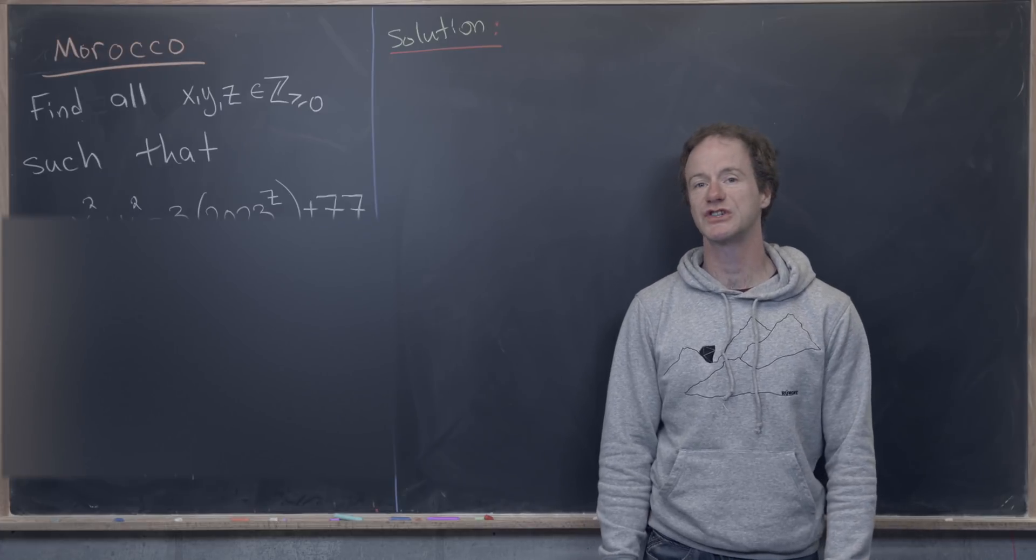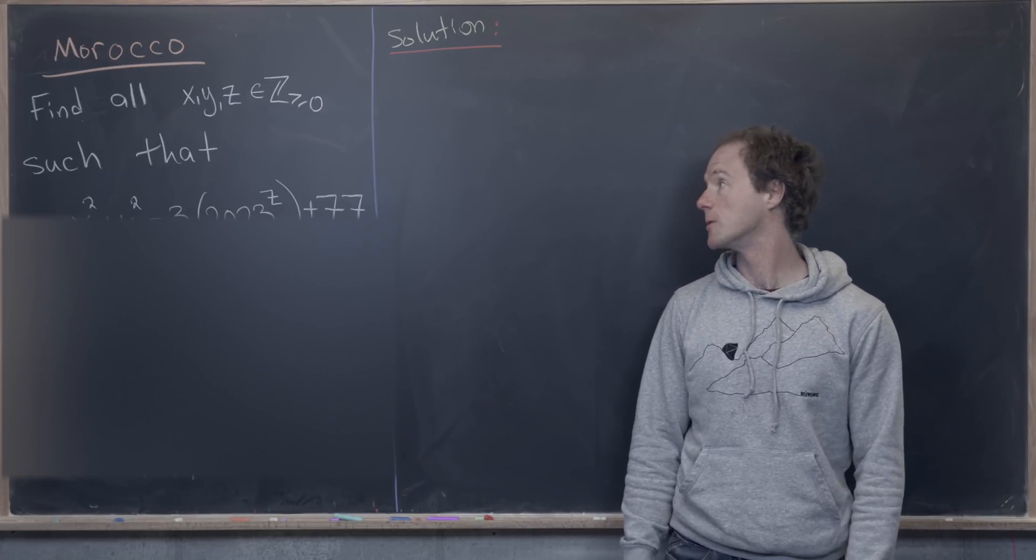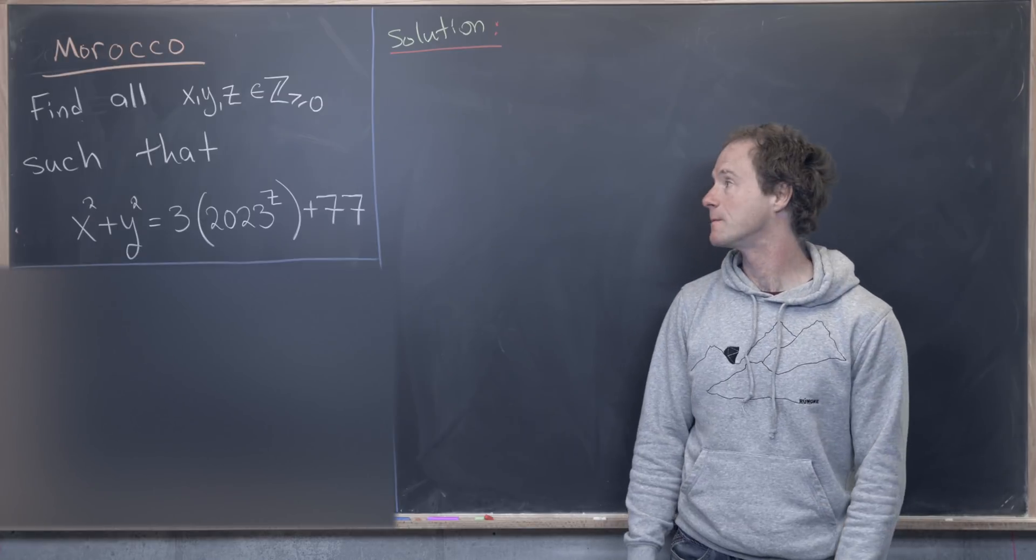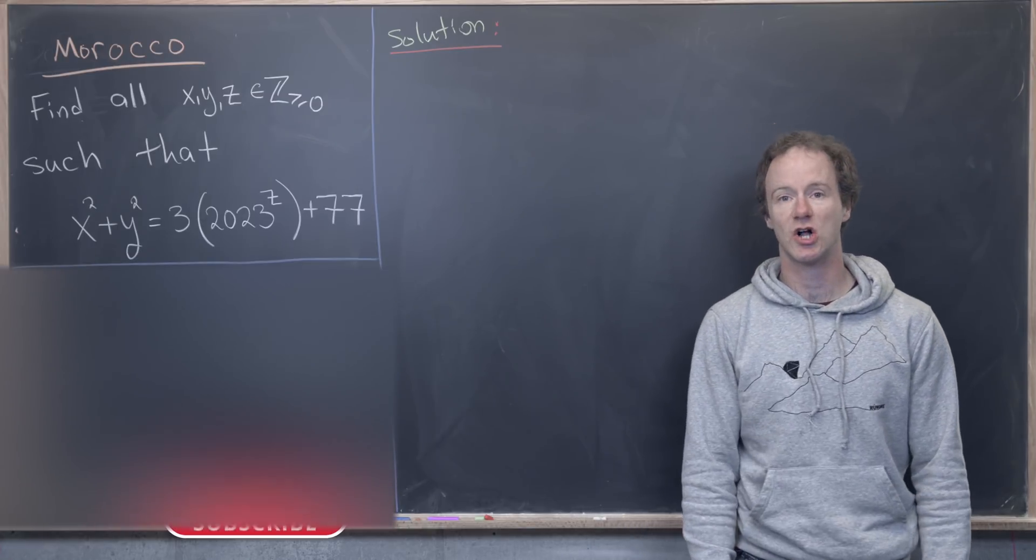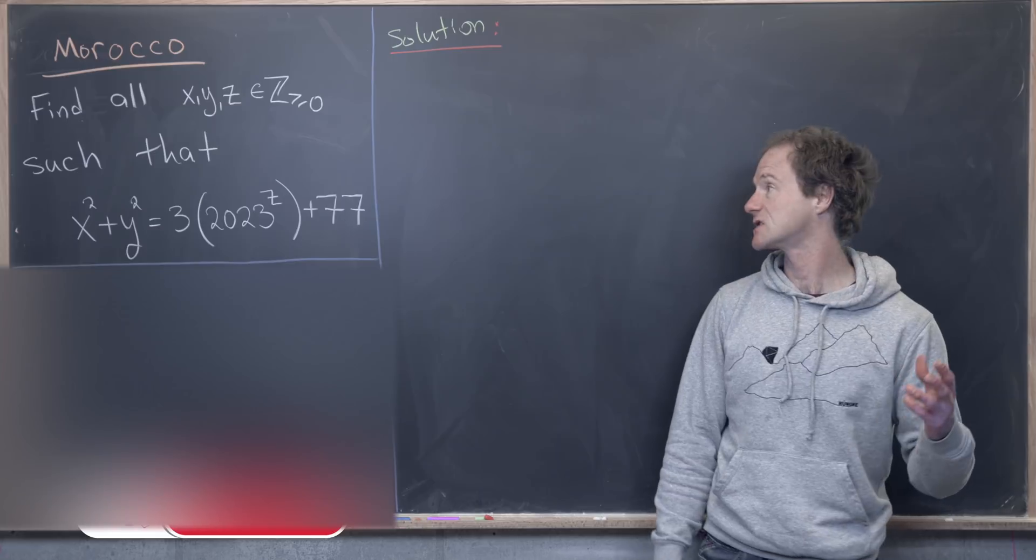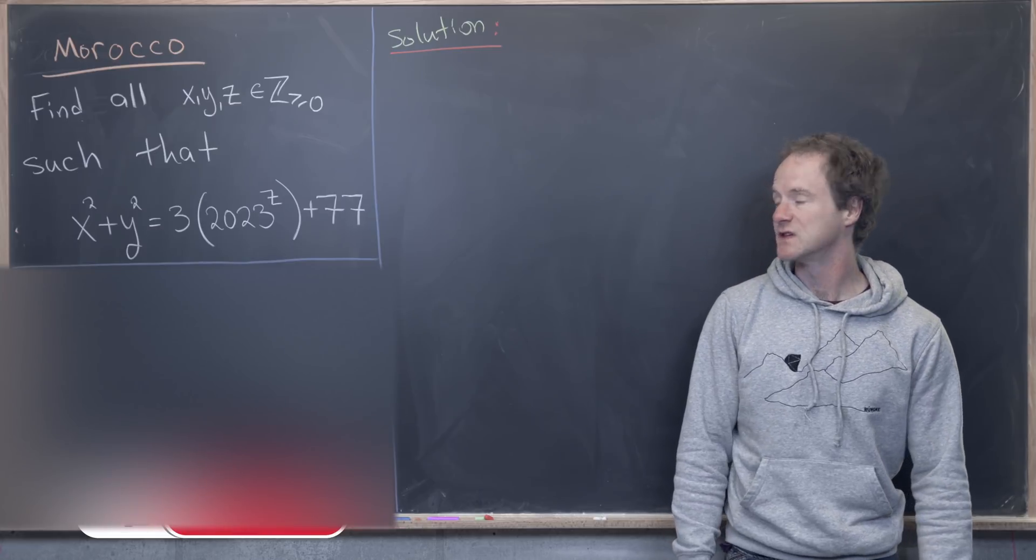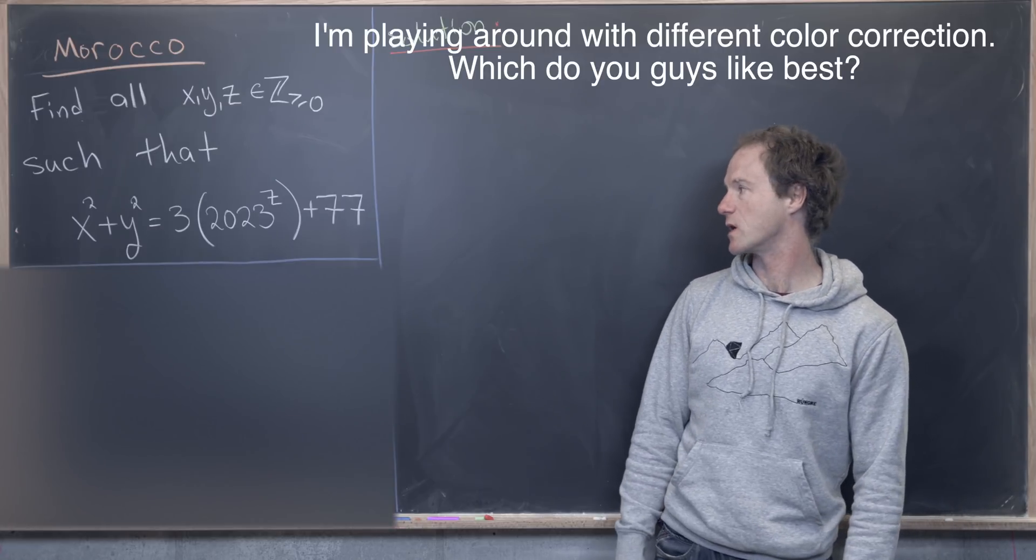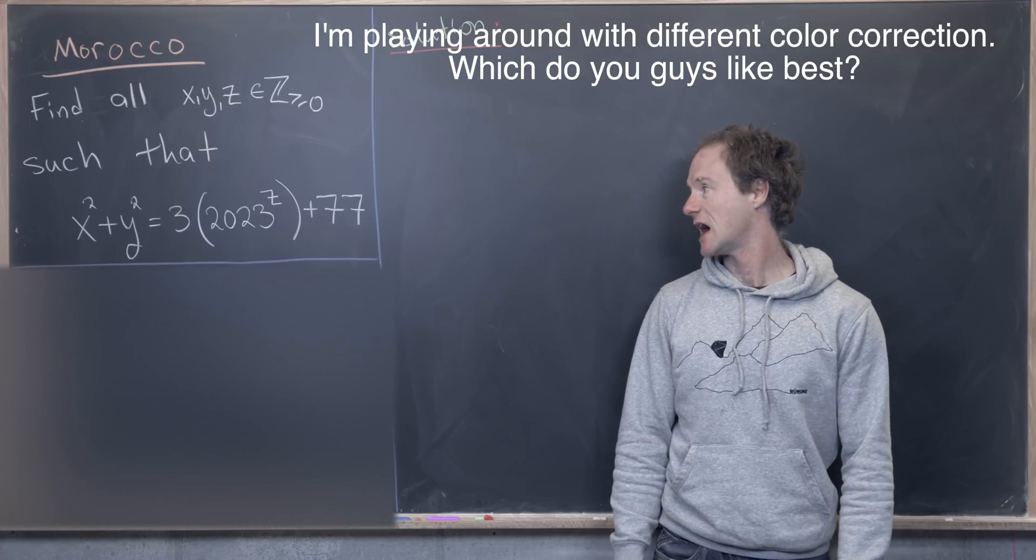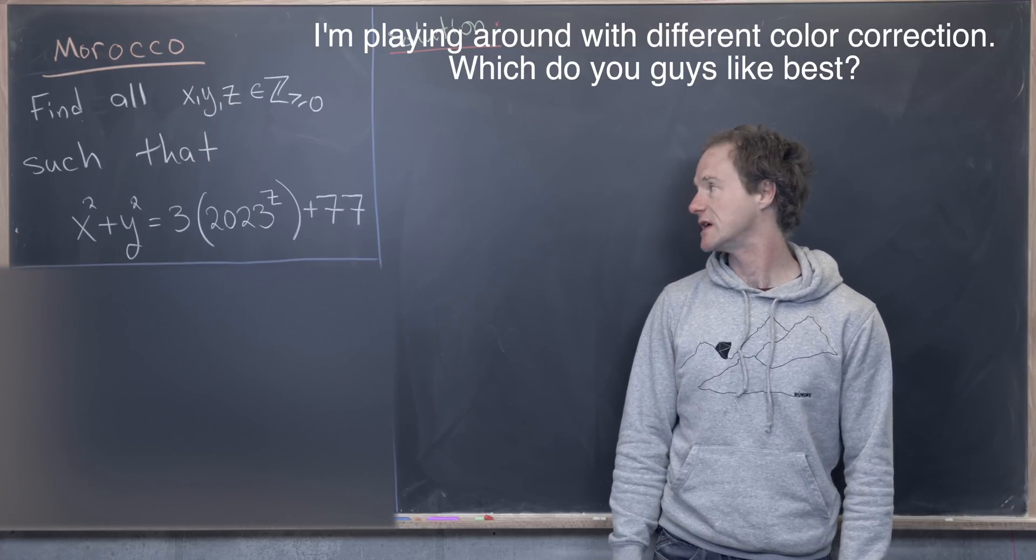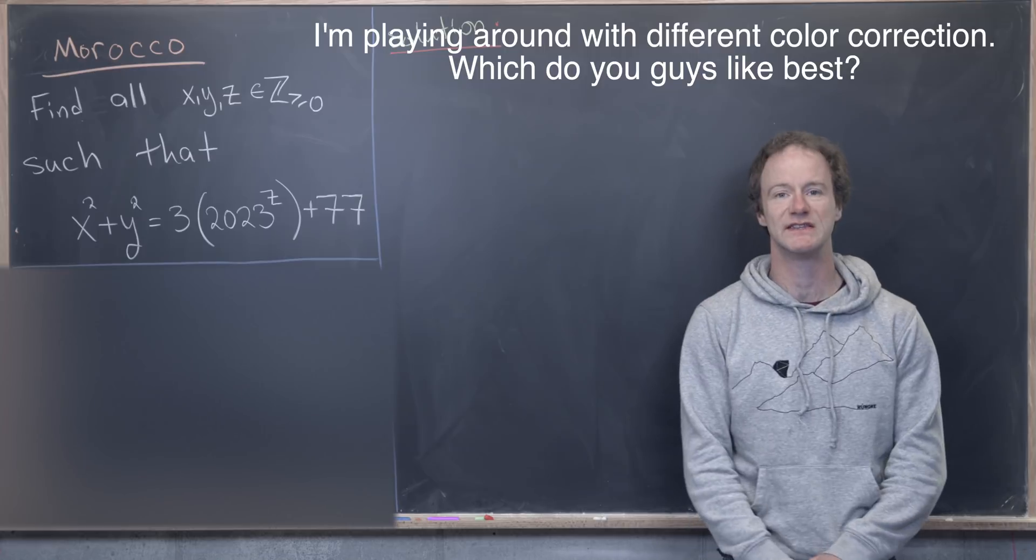Here we want to look at a nice viewer-suggested number theory problem from Morocco. So let's look at the statement. Our goal is to find all non-negative integers x, y, and z, such that x squared plus y squared equals 3 times 2023 to the z plus 77.